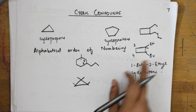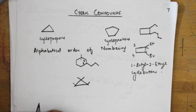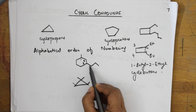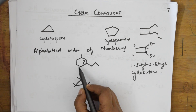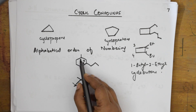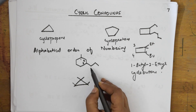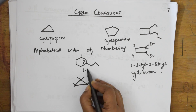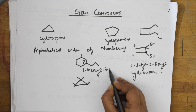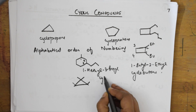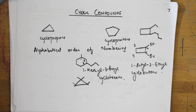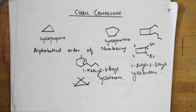In another example, we have a propyl group — three carbons — and a methyl group — one carbon. According to alphabetical order, M comes before P, so this is 1-methyl-3-propylcyclohexane.